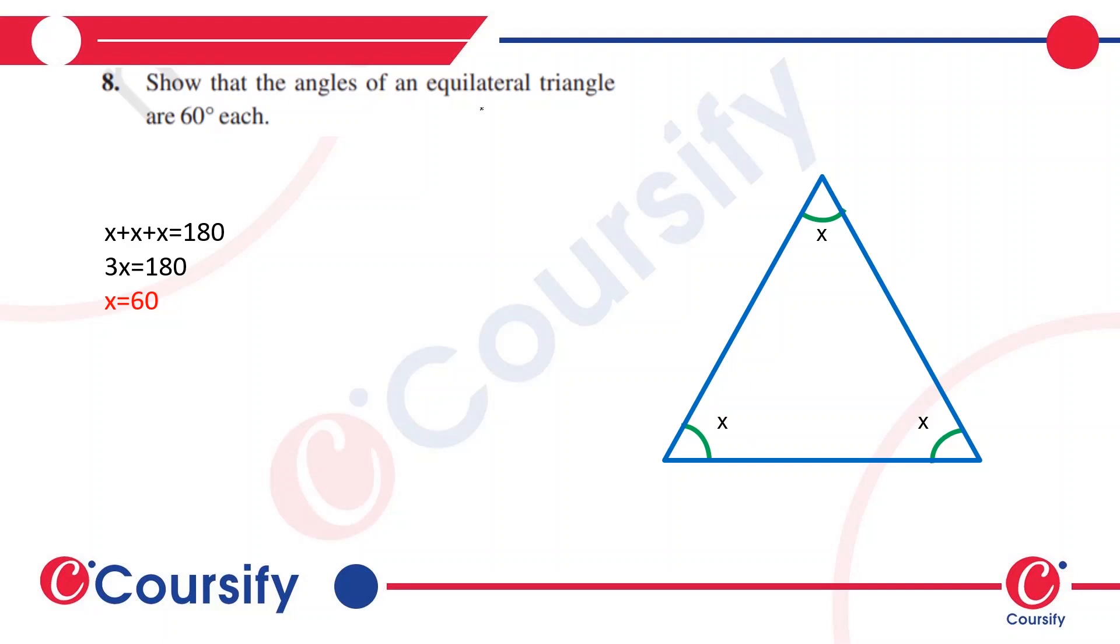Show that the angles of an equilateral triangle are 60 degrees each. An equilateral triangle is a regular triangle, which means all the angles and all the sides of the triangle are equal.